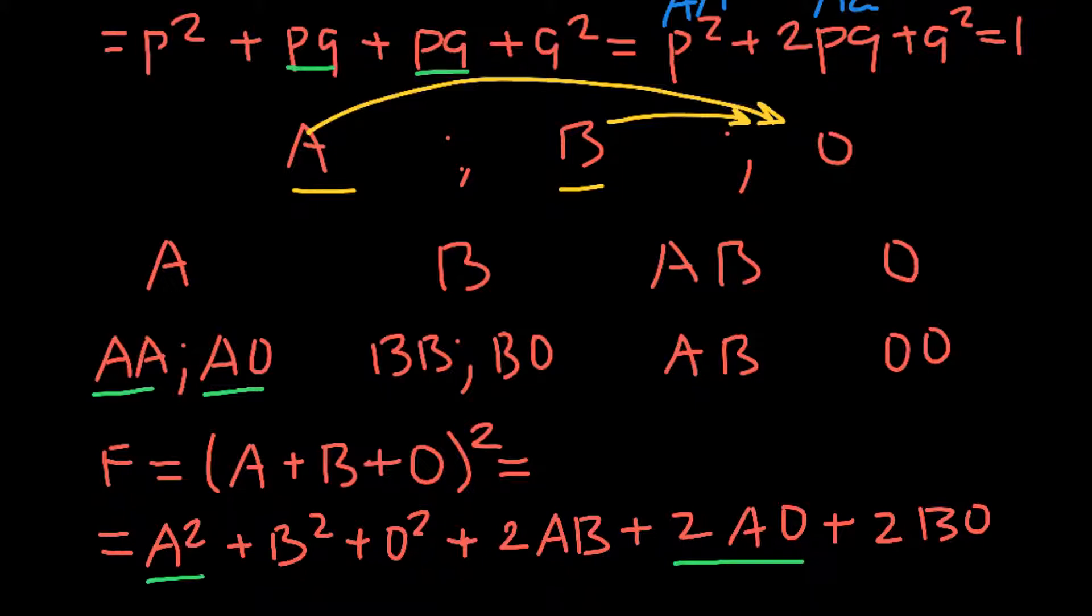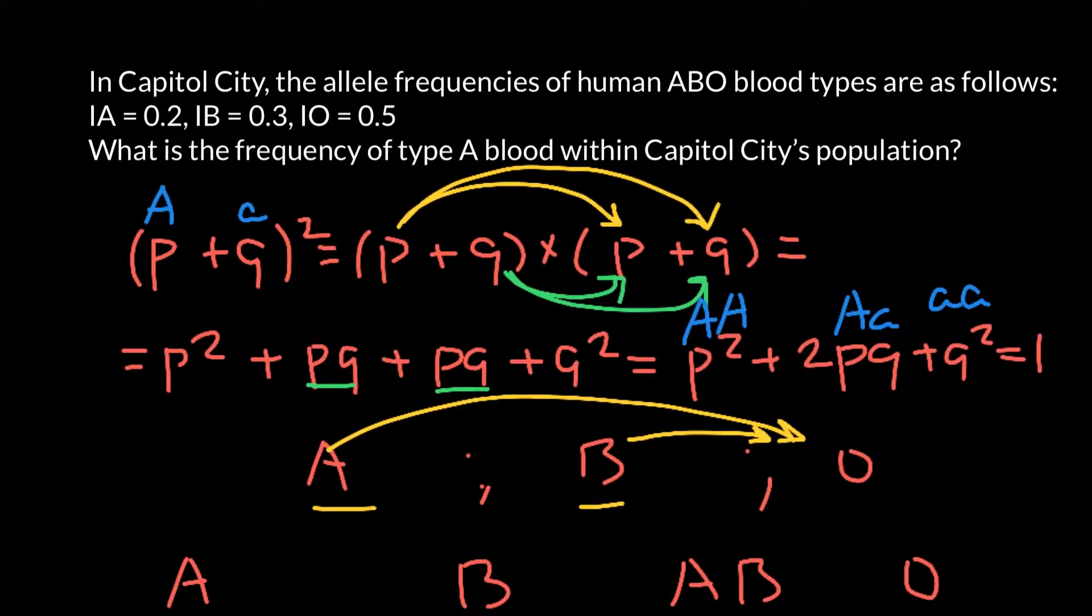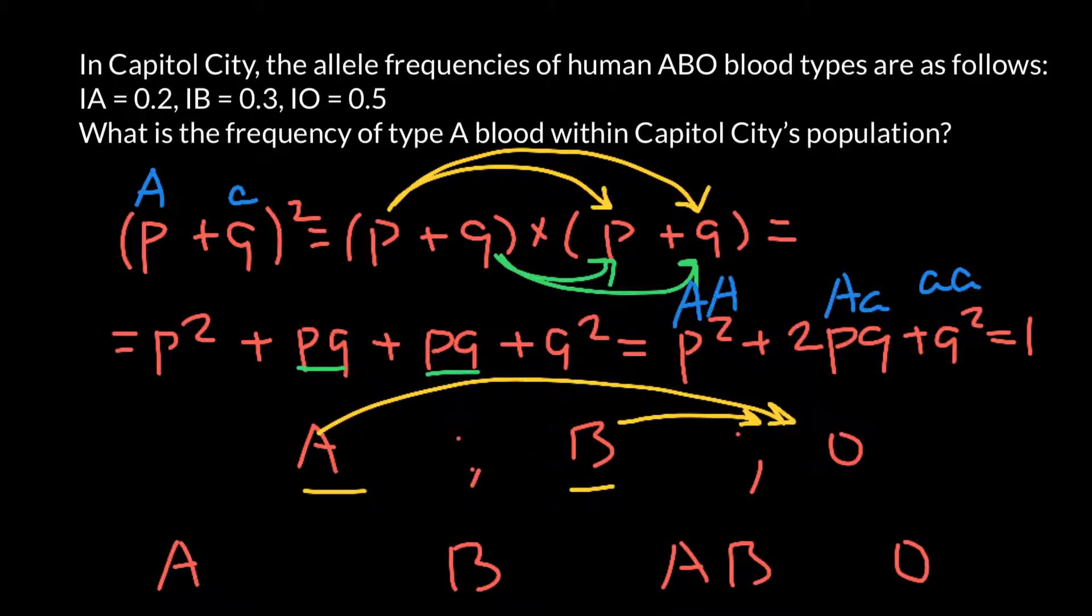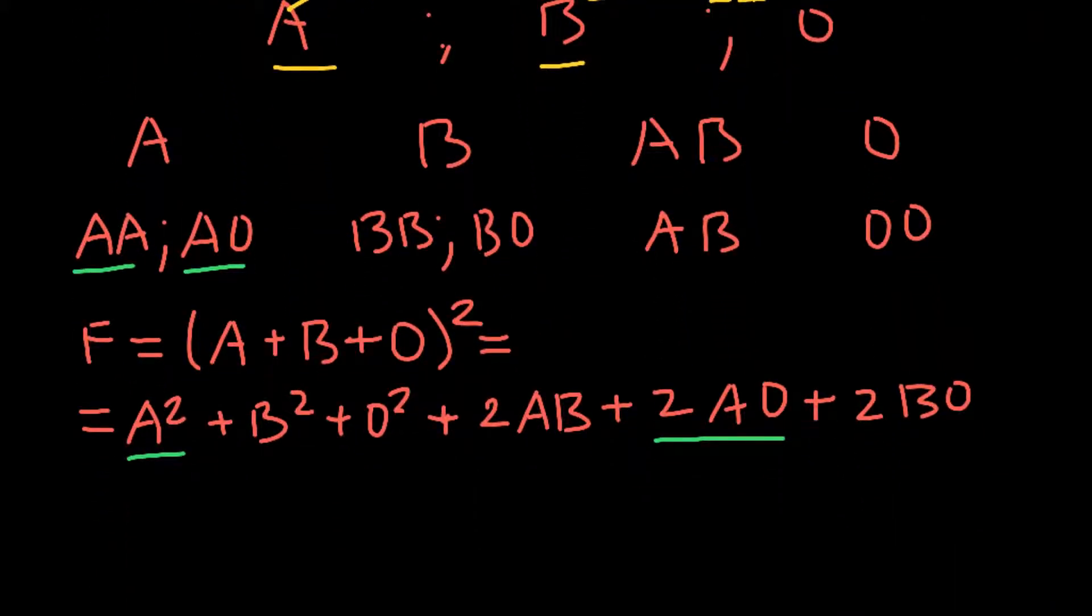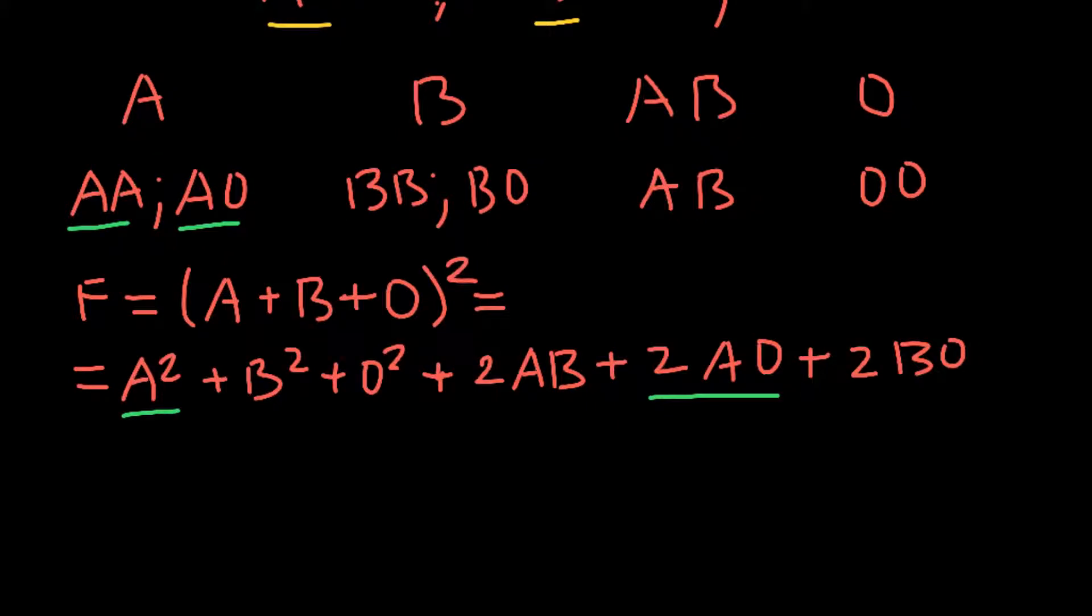Because our question asks what is the frequency of type A blood within capital city's population, we're looking for the frequency of blood group A. So blood group A frequency equals A squared plus 2AO.